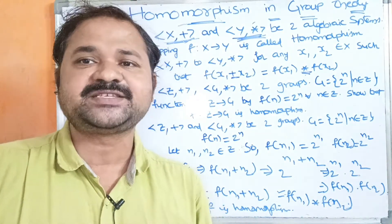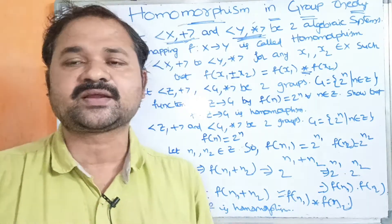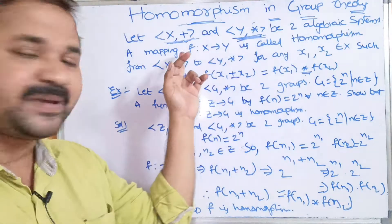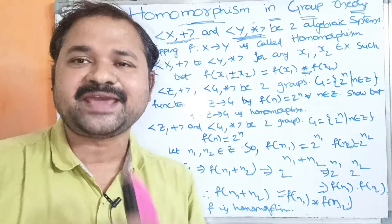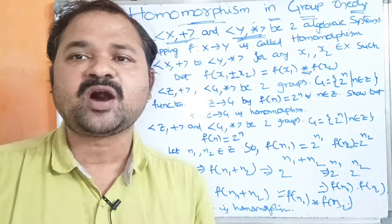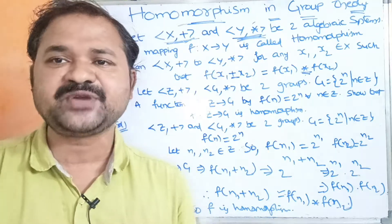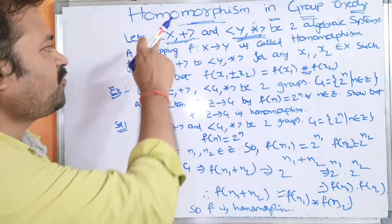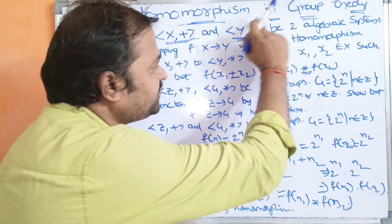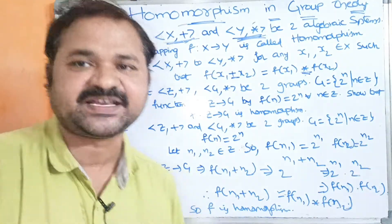So we have two algebraic systems (x, +) and (y, ⋆). A mapping f from x to y is called a homomorphism for any two elements x₁, x₂ belonging to x, such that f(x₁ + x₂) = f(x₁) ⋆ f(x₂). Now let us discuss homomorphism with an example.